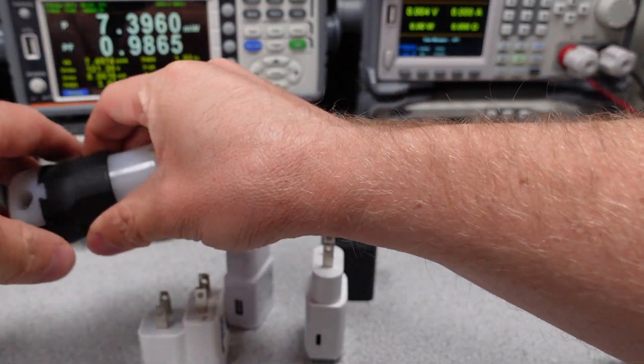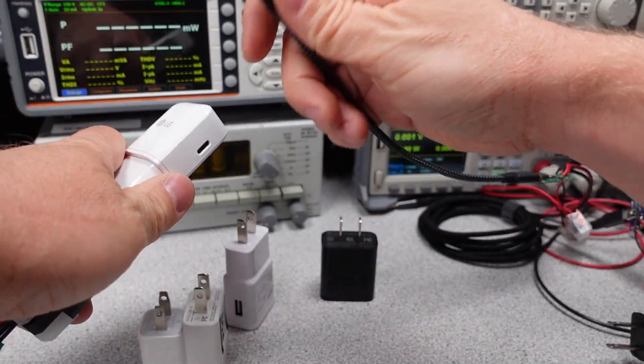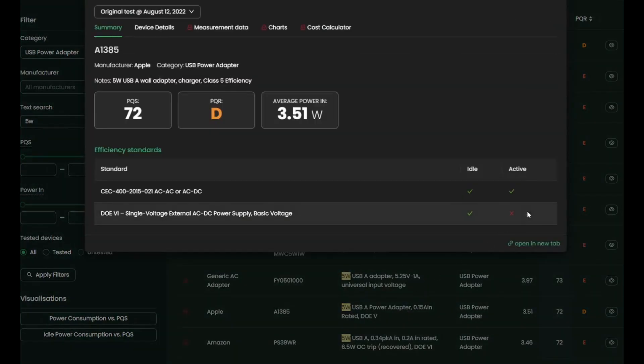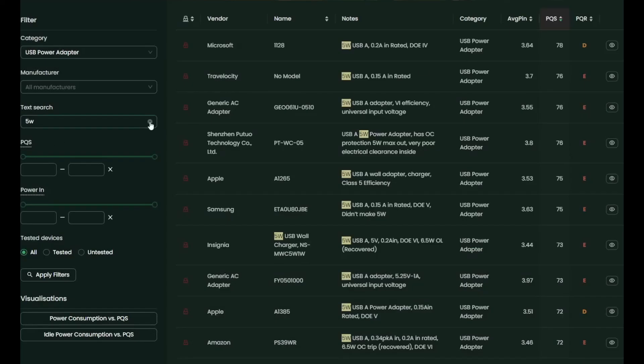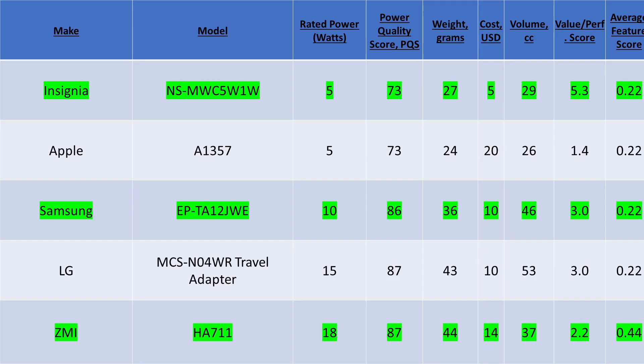They're all fairly close to each other performance-wise, but value-wise present a decent option. Many of the smaller adapters don't meet the efficiency standards like the Department of Energy Level 6 standard. This is an efficiency requirement, and often these fall short. I'll get into that a little more later on. These devices mostly only support 5 volts, and some of these, the 18-watt adapters, do have a 9-volt mode.